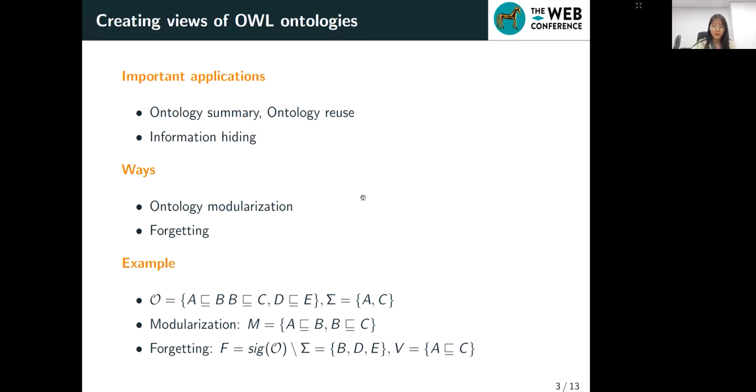Computing views of ontologies is one of ontology re-engineering operations that seeks to generate new ontologies from existing ones while preserving the hidden semantics around our interests. Computing views of ontologies can be used in ontology summary, reusing information, hiding, and so on. There are mainly two ways to realize computing views: ontology modularization and forgetting.